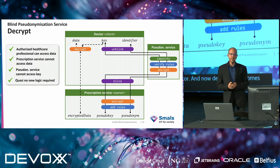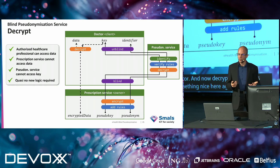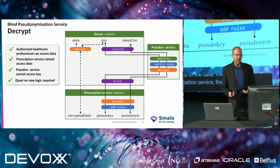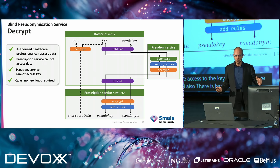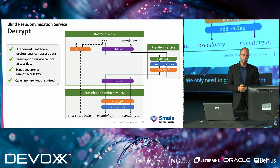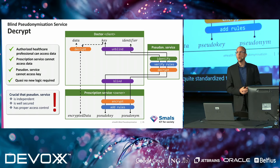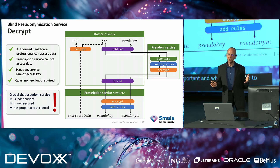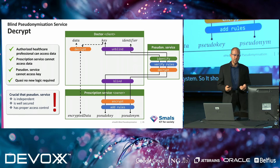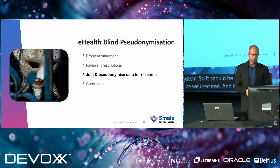There is basically no new logic required to implement this encryption and decryption functionality — we only need to do encrypt and decrypt operations and generate random keys, which are all standardized trivial operations. What is important to stress is that the pseudonymization service is a crucial element of the security of the whole system — it should be independent, well secured, and have proper access control.